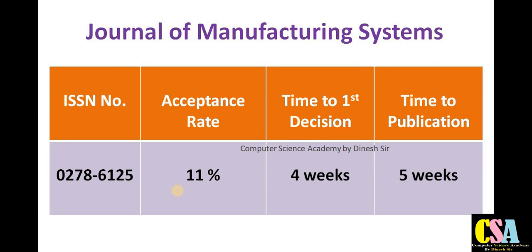The next category is the Journal of Manufacturing Systems. The acceptance rate is 11 percent. The total time required to publish your research paper is within nine weeks — most probably two months or one and a half months.